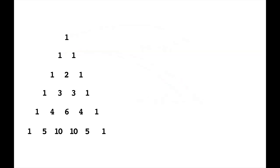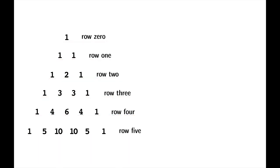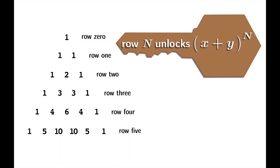So let's come up with a useful way of referring to each row. If we start our counting at zero, so the top row is row zero, then we will be able to claim that row n unlocks x plus y to the n.